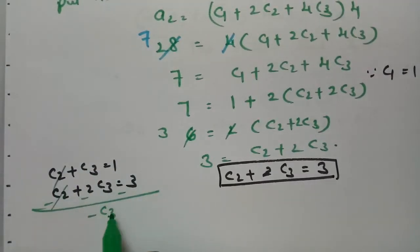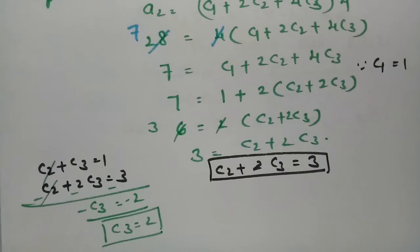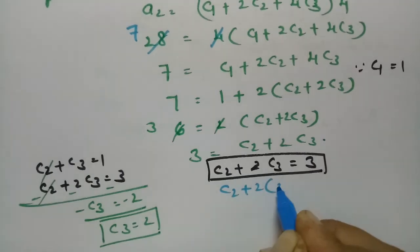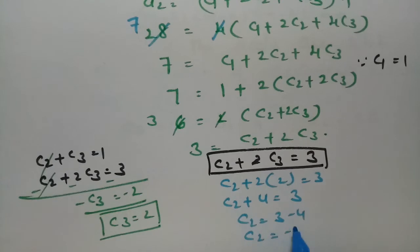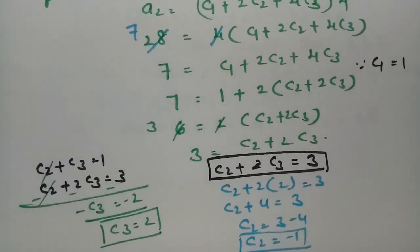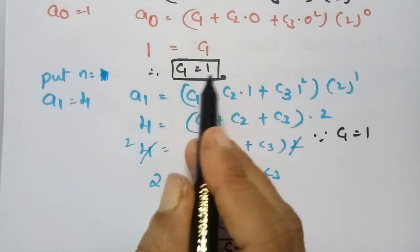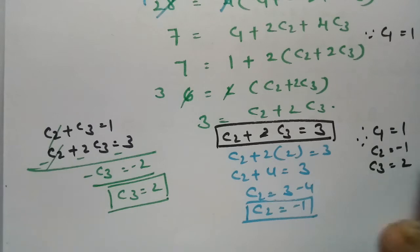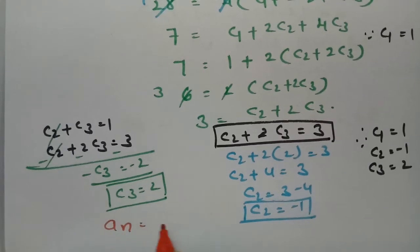Now we have two equations: c_2 + c_3 = 1 and c_2 + 2·c_3 = 3. Subtracting the first from the second: c_3 = 2. Substituting c_3 = 2 back into c_2 + 2·(2) = 3: c_2 + 4 = 3, so c_2 = -1. Therefore c_1 = 1, c_2 = -1, c_3 = 2.